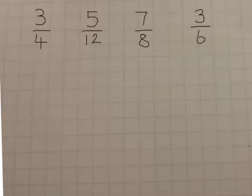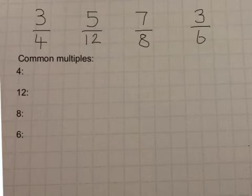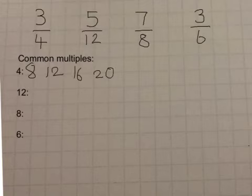Today I'm going to show you how to order fractions. The common multiples of 4 are 8, 12, 16, 20 and I'm going to go on until 28.